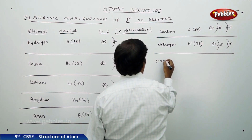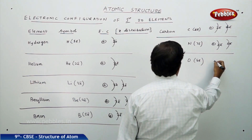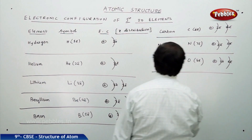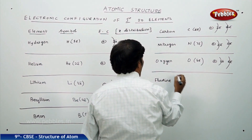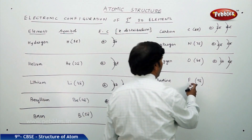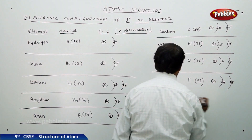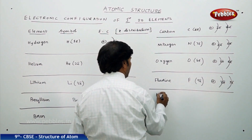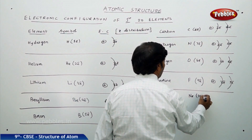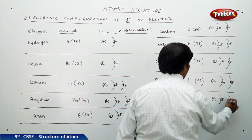Oxygen, symbol O, has 8 electrons: nucleus, 2 electrons in first shell and 6 electrons in second shell. Fluorine, symbol F, has 9 electrons: nucleus, first shell 2 electrons, second shell 7 electrons. Neon, symbol Ne, has 10 electrons: nucleus, 2 electrons in first shell and 8 electrons in second shell.